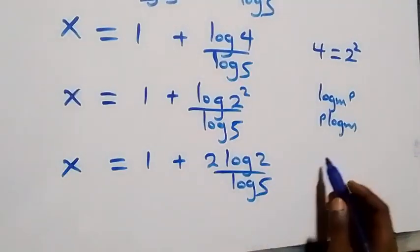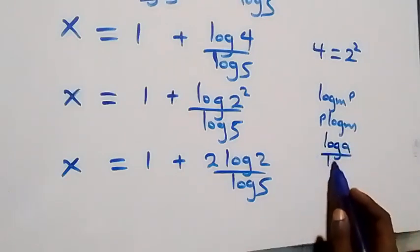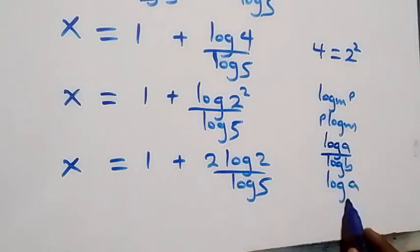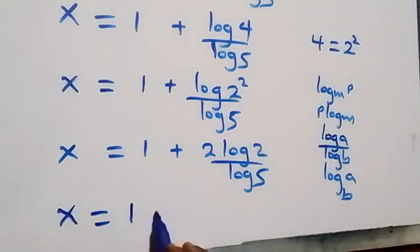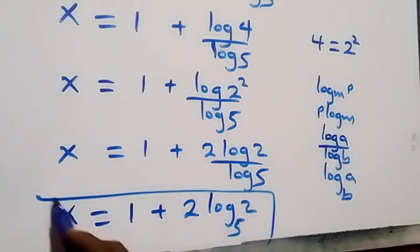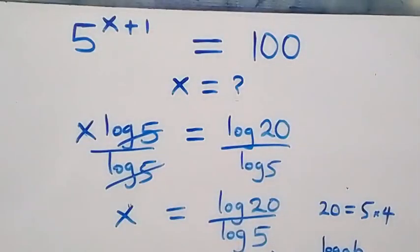Here we apply the change of base rule: log a over log b can be written as log a to base b. So what we have becomes x equals 1 plus 2 log 2 to base 5. This is the value of x in this problem: x equals 1 plus 2 log base 5 of 2. Now let's check if this satisfies the given problem.